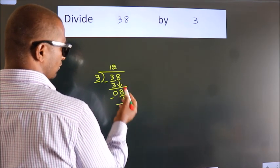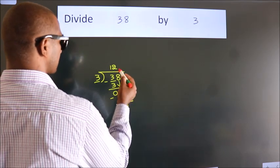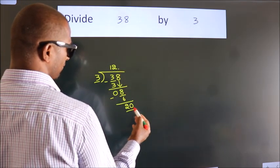After this, no more numbers to bring down. So what we do is, we put dot take 0. So 20.